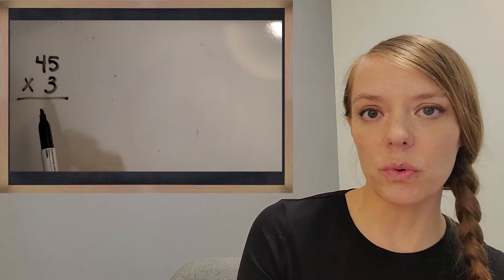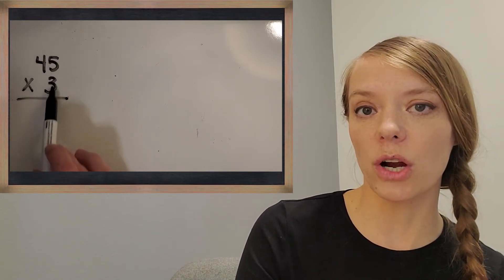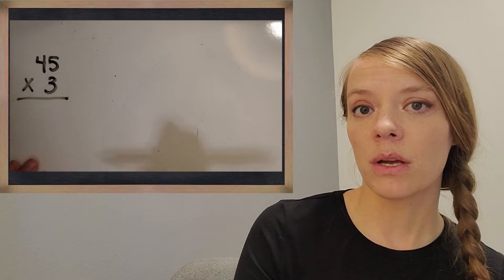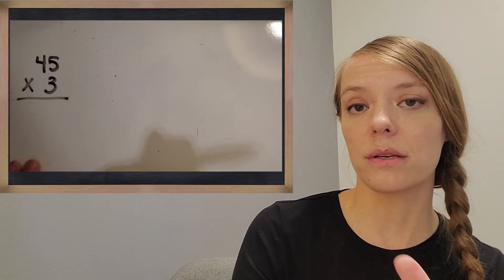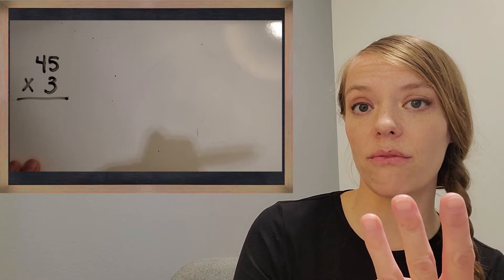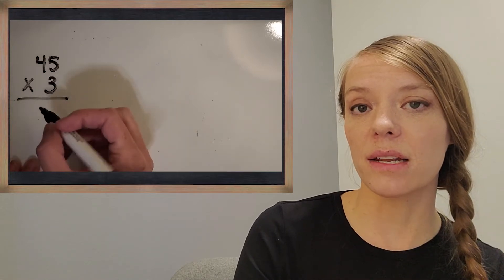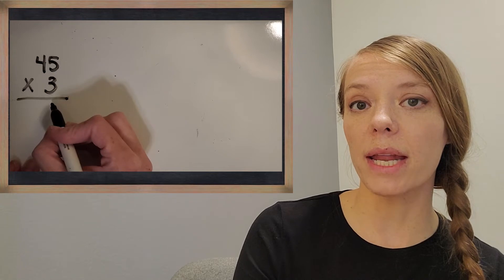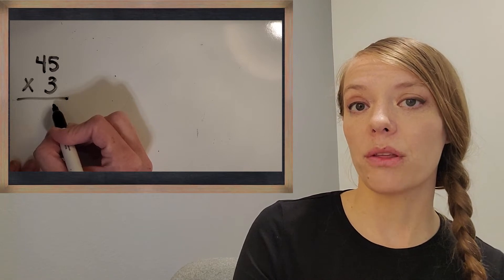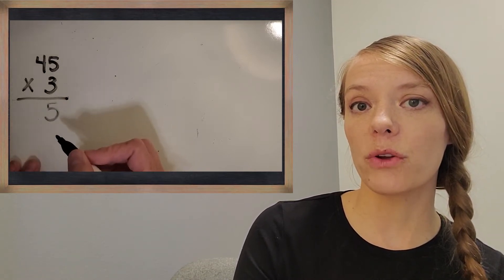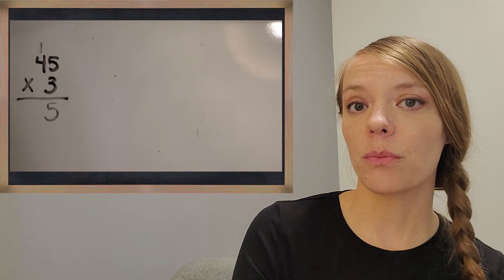The first thing you want to do, just like when you're adding the traditional way, you start with the smallest place value. So we're going to start with five times three. It's great if you know that fact, but if you don't, you have ways where you can count by fives three times. So what is five times three? Awesome — 15. We're going to write it in the traditional way: put the five down in the ones place and regroup that one up with the tens.